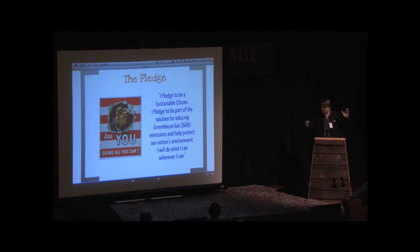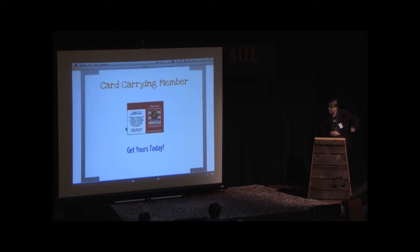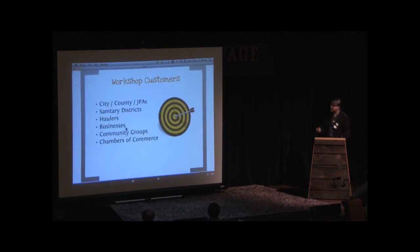And then at the end, we ask everybody to take a pledge. We go through this, and it's kind of like I pledge of allegiance. I pledge to be a sustainable citizen, and I will do what I can, whenever I can. So this is really kind of a compelling thing. At the end, we give everybody a sustainable citizen card, just like the Mickey Mouse Club, but only better. And on the back are the 10 action steps, so they can talk about this with their friends and family, about what they've done, what they can do, and what they are doing in terms of these sustainable things.